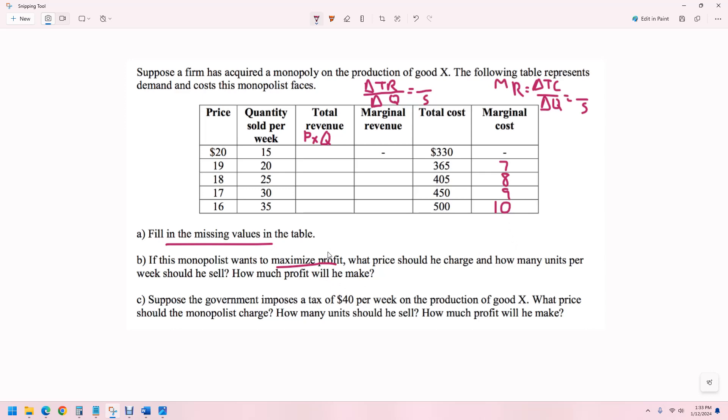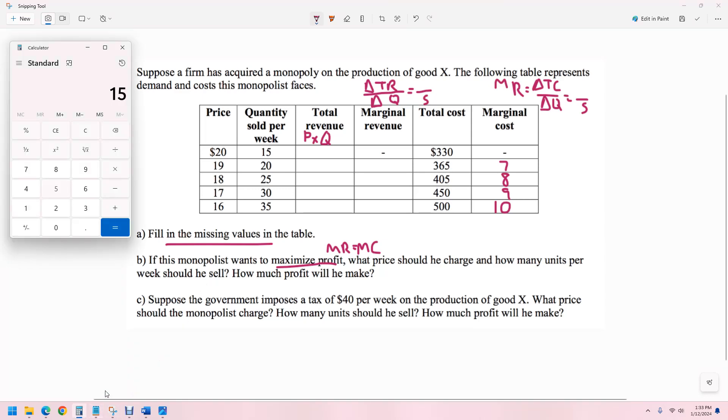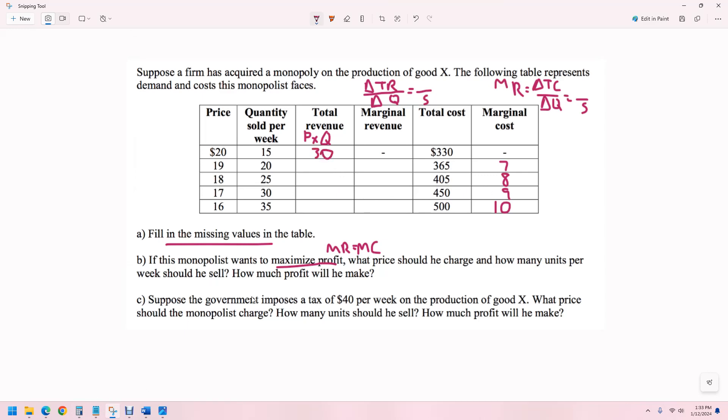Down here it says maximize profit. We need to find the quantity where marginal revenue equals marginal cost. So we already did marginal cost. Total revenue is going to be 15 times 20. 15 times 20 is 300. And 19 times 20 is 380.